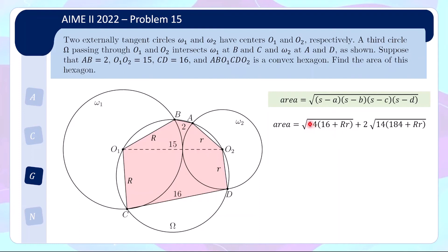This greatly restricts what the product rR can be. Because there's a copy of 14 in each expression, and in order for them to be perfect squares, the remaining bracket must also contain a factor of 14. Both brackets are congruent to 2 mod 14, so the product rR must be congruent to 12 mod 14 in order to produce a factor of 14 and give an integer square root. Furthermore, rR is bounded: since r plus R equals 15, the maximum of rR is 7.5 × 7.5, which is about 56.